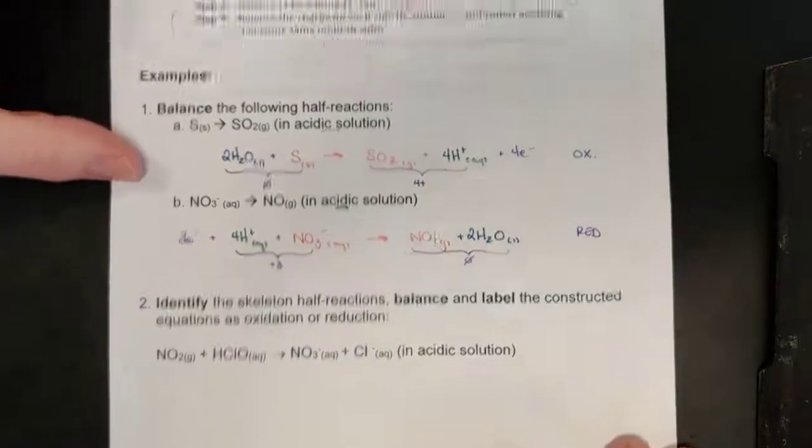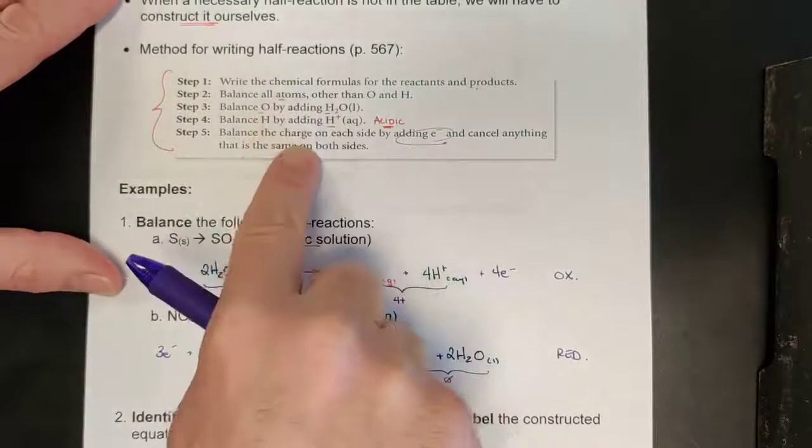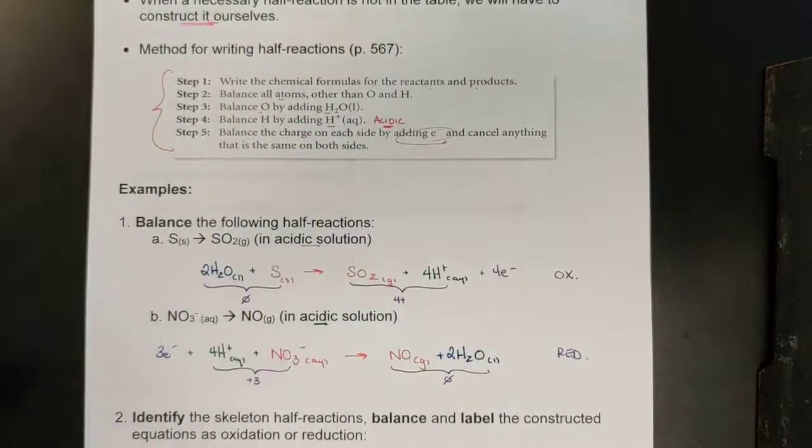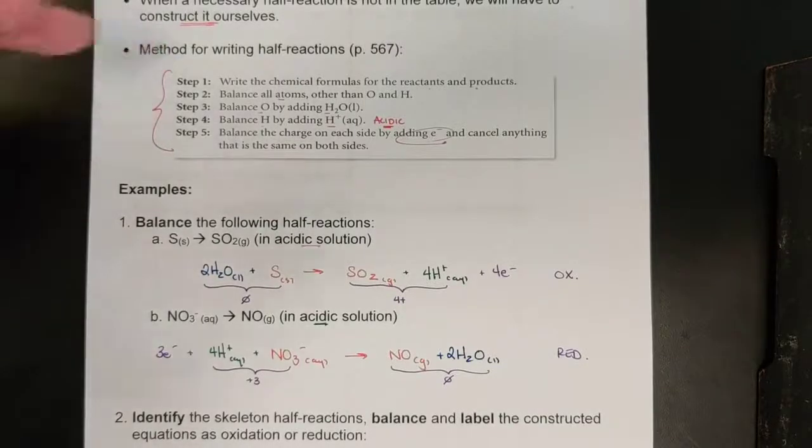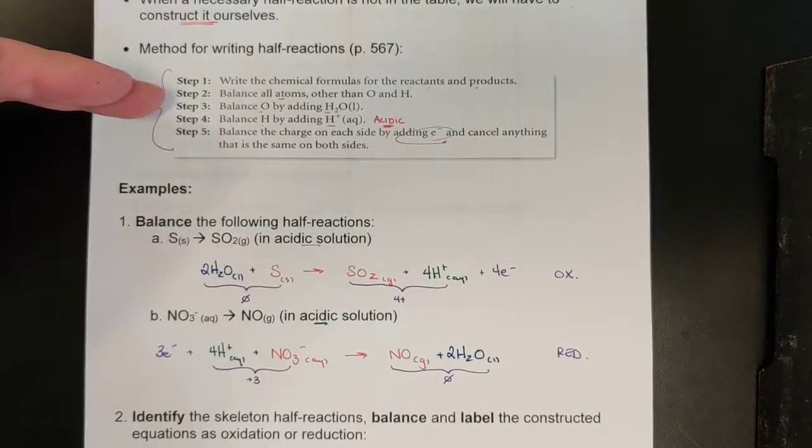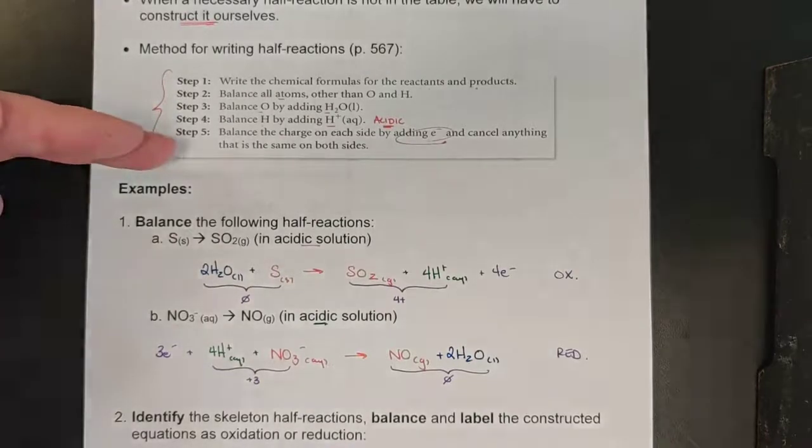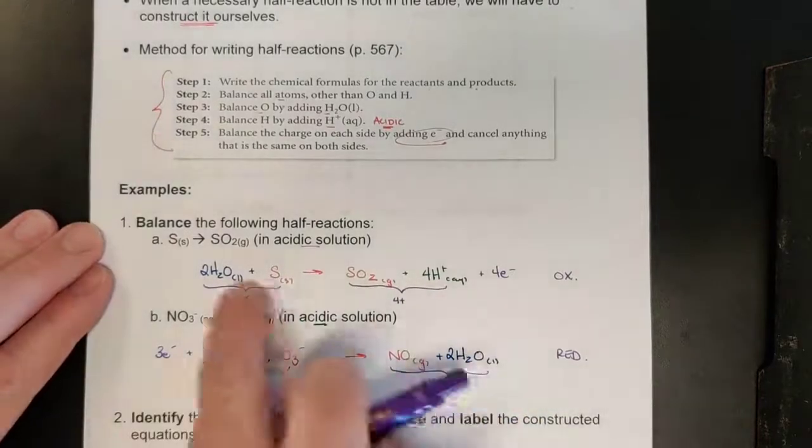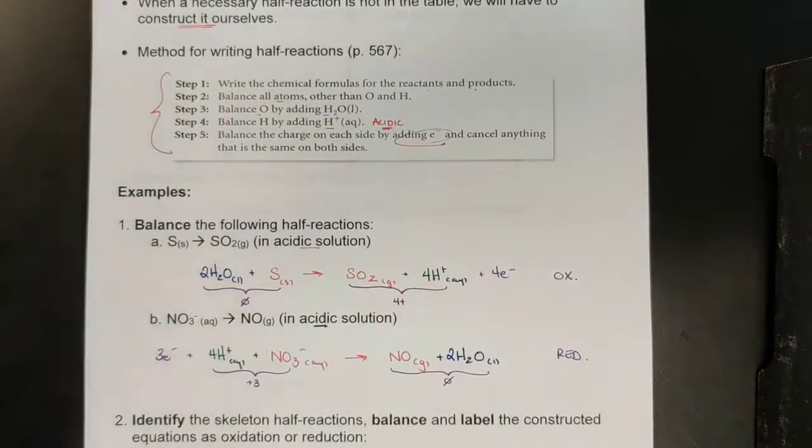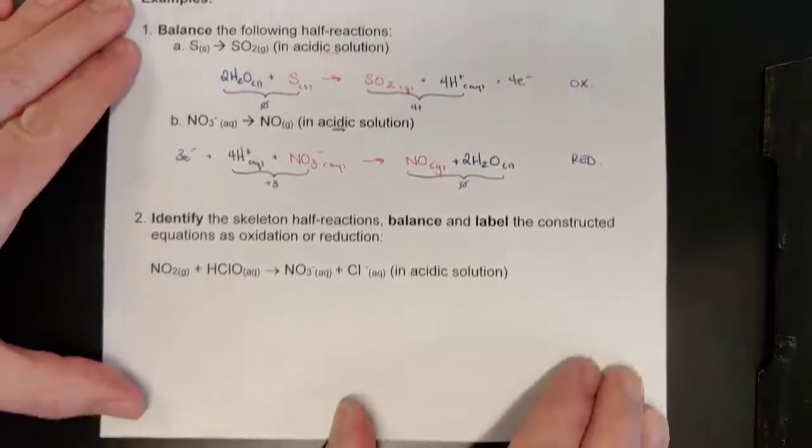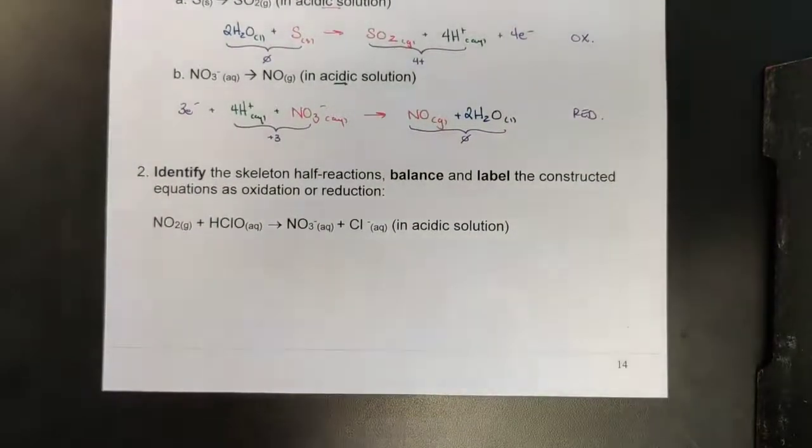So, this does have a cadence or a sequence. Just follow along with it every single time and it will work out. Balance things that are not oxygen and hydrogen. Balance oxygens with water. Balance hydrogens with H plus. Balance the electrons. And then do a quick one over. I don't see anything common here that needs to be cancelled out. Let's get another example in here.